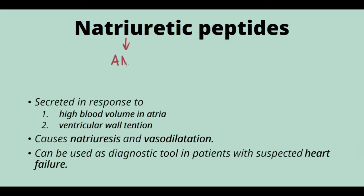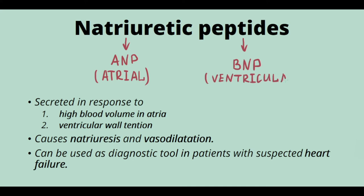Natriuretic peptides consist of atrial natriuretic peptide (ANP) and brain natriuretic peptide (BNP). Both are secreted by myocardiocytes in response to high blood volume in the atria and high ventricular wall tension. Their main functions are natriuresis, vasodilatation, and inhibition of aldosterone secretion.